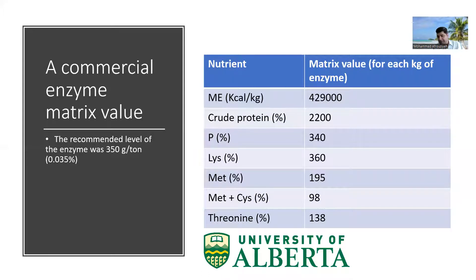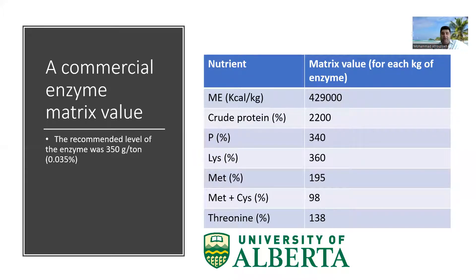We have a similar story for phosphorus, lysine, methionine, methionine plus cysteine, and threonine. For each enzyme, we have a recommended inclusion rate in the diet. Usually it varies from 50 grams per tonne all the way to 500 grams per tonne, and you need to check the enzyme label to see how much to use. In this example, the recommended inclusion rate is 350 grams per tonne.